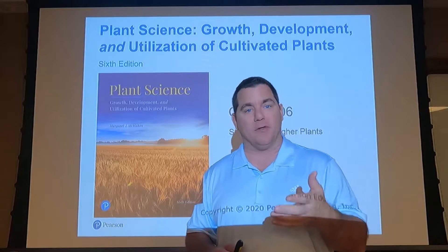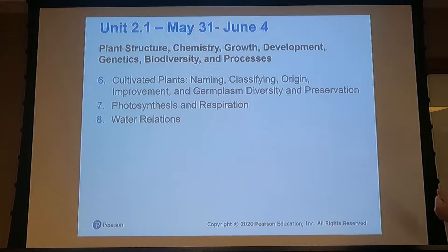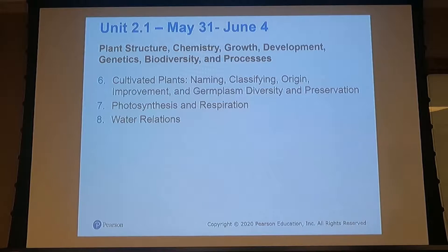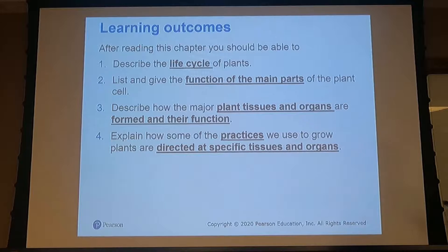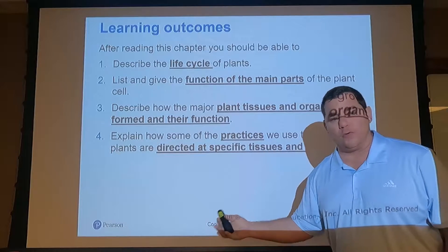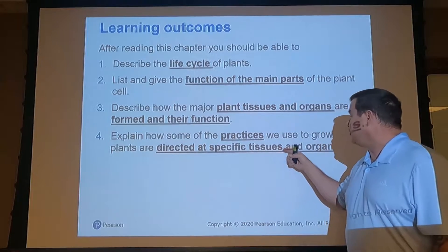Chapter six is mostly about the structure of higher plants — how we go about naming and classifying them — and then we'll get into photosynthesis, respiration, and water relations. Unit two one covers the week of May 3rd to June 4th: we'll describe the life cycle of the plant, functions of the main parts, plant tissues and organs, how they are formed, and the practices we use to grow those plants directed at specific tissues and organs.